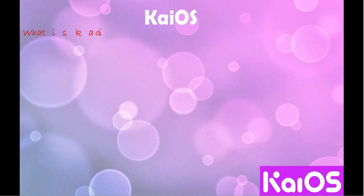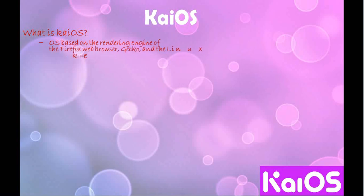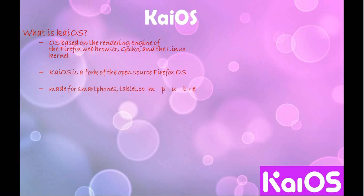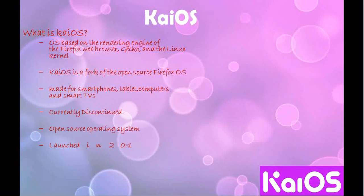What is KaiOS? It is an OS based on the rendering engine of the Firefox web browser, Gecko, and the Linux kernel. KaiOS is a fork of the open-source Firefox OS. It is made for smartphones, tablets, computers, and smart TVs. It is a currently discontinued open-source operating system, launched in 2013.